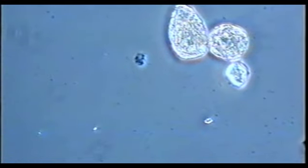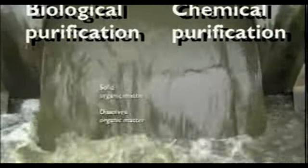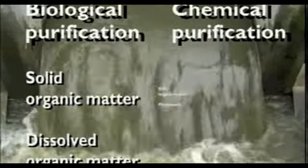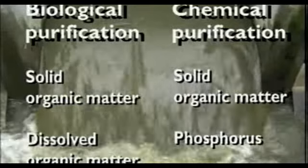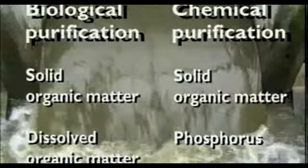Biological purification lasts a comparatively long time and is dependent upon the effectiveness of the microorganisms. Chemical and biological treatment work in different ways and achieve different results. The biological process removes both dissolved and solid organic matter. The chemical process removes solid organic matter and phosphorus. We have to determine the major causes of oxygen deficiency in waters and select the treatment process in accordance with local environmental requirements.